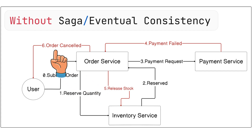Here, the order service acts as a central orchestrator, calling each downstream service one after another and expecting them to respond immediately and successfully. If any step fails, the order service manually invokes the rollback action to undo the previous steps. In this approach, we assume that each service like inventory or payment is always available, fast, and reliable.